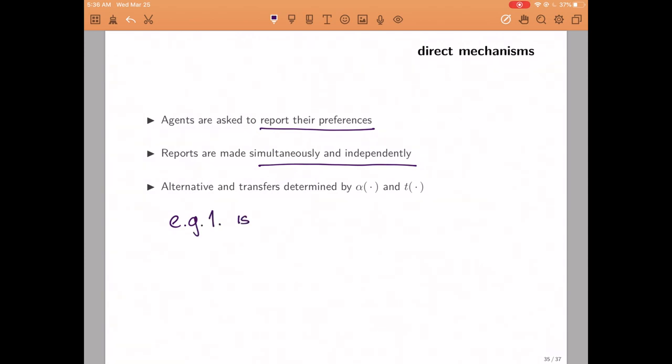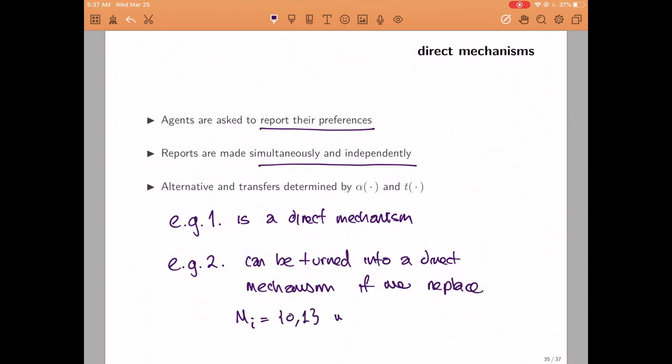For example, the efficient mechanism we discussed earlier today and last class is a direct mechanism because the message spaces are just the set of possible values. In contrast, the 50-50 split mechanism is not a direct mechanism because the message space is not the set of possible values. But we could transform it into a direct mechanism by enlarging the message space to include the set of possible values and adjusting the transfer rule and the allocation rule accordingly.